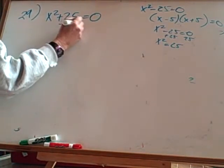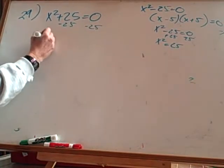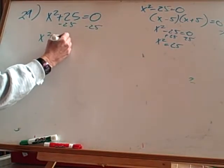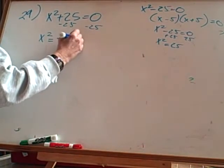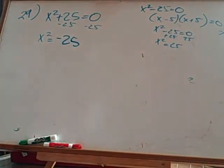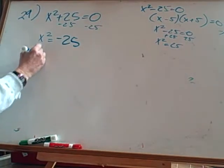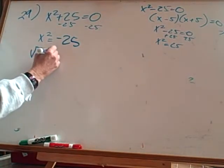is subtract 25 from both sides. x² = -25. [Brief interruption about someone wiping the board.] Now I have x² isolated. I'm going to take the square root of both sides. √(x²) equals